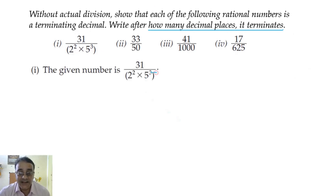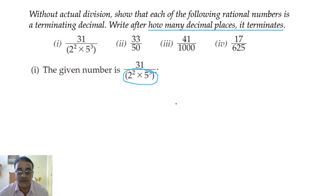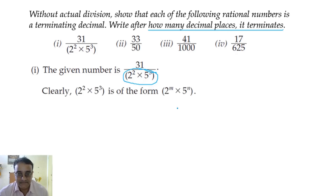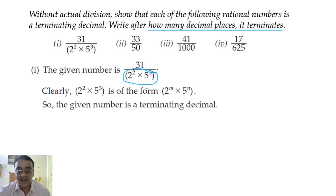Now, clearly the denominator is in the form of 2^m × 5^n, where m = 2 and n = 3. So that means it is a terminating decimal.